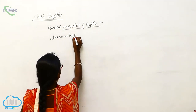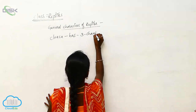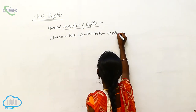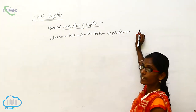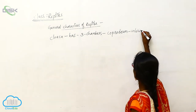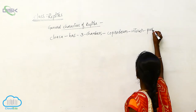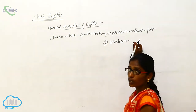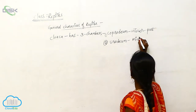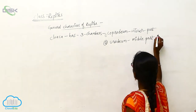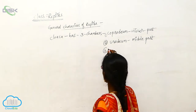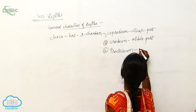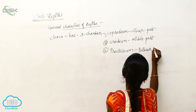Cloaca has three chambers. The first is the coprodeum, which is the anterior part. The second is the urodeum, which is the middle part of the cloaca. The third is the proctodium, which is the posterior part.